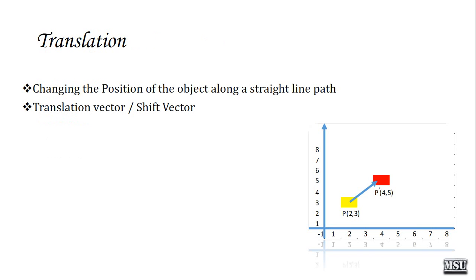First of all, we are going to discuss what is meant by translation. Changing the position of an object along a straight line path is defined as translation. For example, if we have a point located at (2, 3), after translation the same point is now located at (4, 5). To perform this translation, we need a translation vector and shift vector.